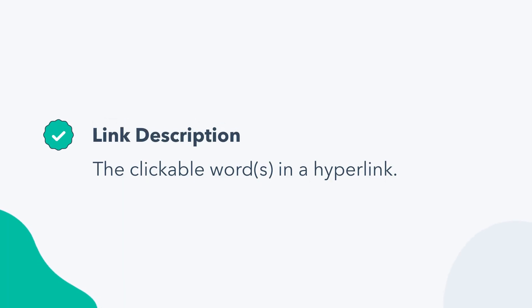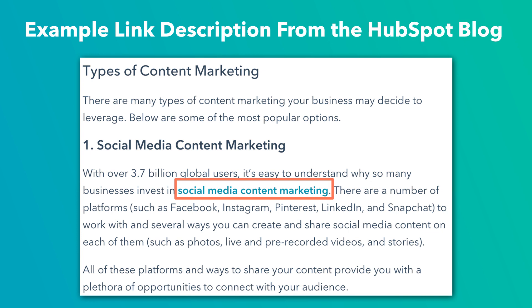Regardless of the solution that works for you, having a well-written meta description will help improve your rankings in search engines and drive traffic to your webpage. On a webpage, descriptive link text is important for your SEO performance. A link description is the clickable word or words in a hyperlink. Link descriptions help users and search engines better understand your content. Search engines will be better able to understand the purpose of your links and the hierarchy of the post, and people will be more inclined to click a link that directly explains where the destination is. Let's take a look at an example link description from the HubSpot blog.